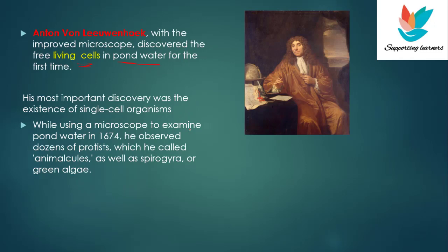His most important discovery was the existence of single-celled organisms. While using a microscope to examine pond water in 1674, he observed dozens of protists, which he called 'animacules,' as well as spirogyra or green algae. He observed single-celled organisms like bacteria, and he named those organisms animacules. Animacules means animal-like structures.